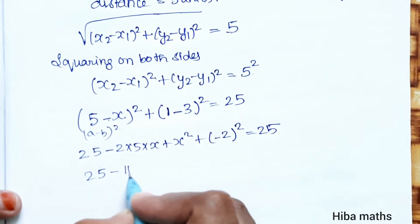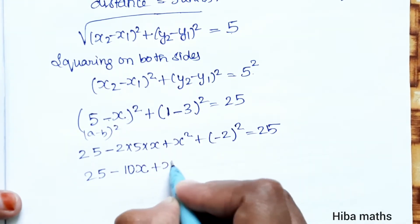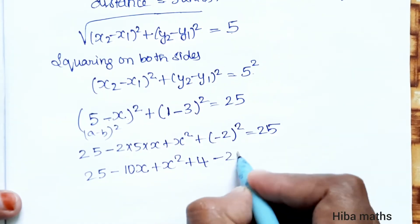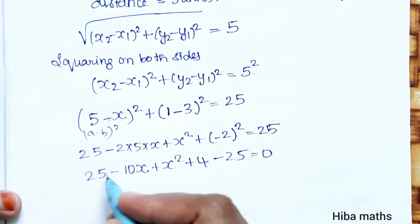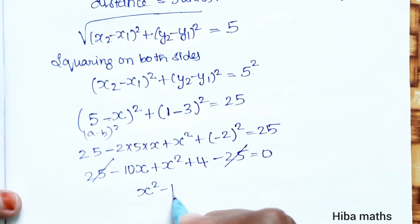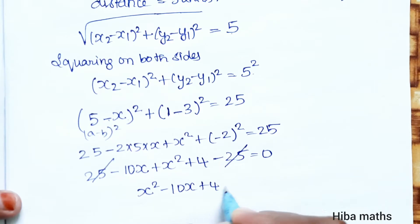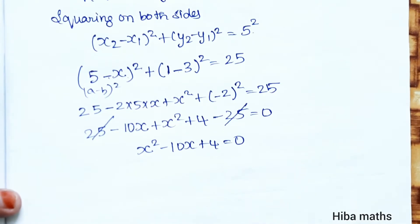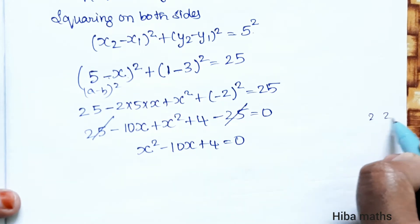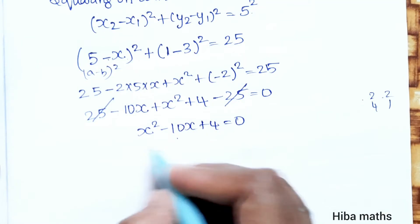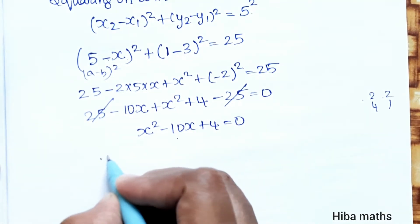Expanding: 25 minus 10x plus x squared plus 4 equals 25. Moving 25 to the other side: plus 25 minus 25 cancel. So we get x squared minus 10x plus 4 equals 0. Now factorize — this is not factorable directly, so we use the quadratic formula.